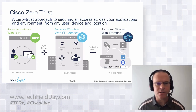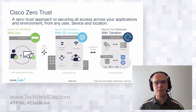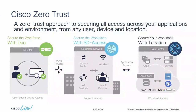The way Cisco approaches this is with three principles. First, securing the workforce — the end users at the application layer — using Duo, AMP, and other endpoint technologies. Then securing the workplace, which is the focus of this presentation, focusing on the corporate network and its interaction with different users and their underlying devices. And then securing the workload, which is our Tetration offering to market. We're going to be focusing on securing the workplace.